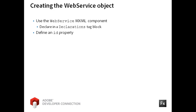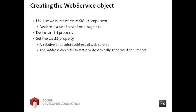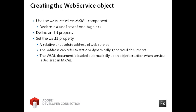You should define an ID property for the Web Service object to uniquely identify the component instance and to make it accessible to your ActionScript code. Next, you must define the WSDL property, which is a relative or absolute address to the Web Service. The address can refer to static or dynamically generated WSDL documents. In either case, the document will be loaded automatically when the Web Service object is created.